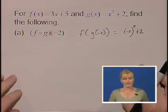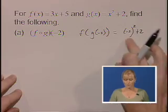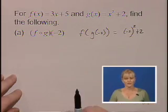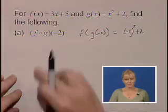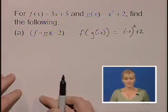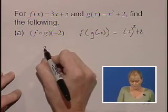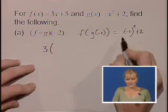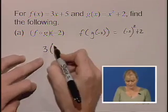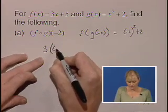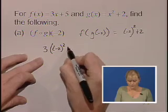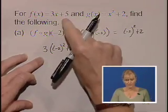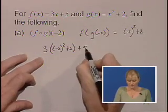F of X is equal to 3X plus 5. So we're going to take this entire expression and substitute it into the X position of our F function. So that becomes 3 of — we're going to replace this entire piece into the X position — negative 2 squared plus 2. And don't forget the last term of the F function.